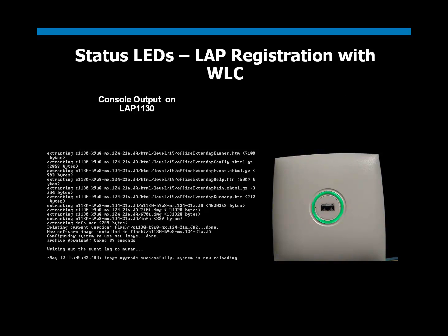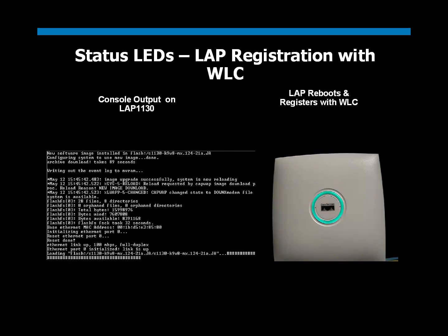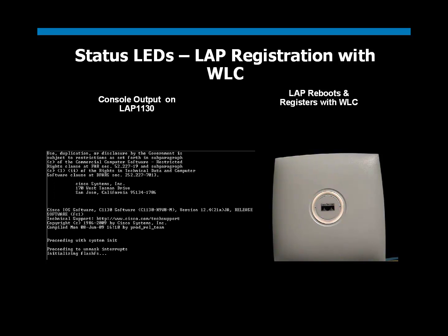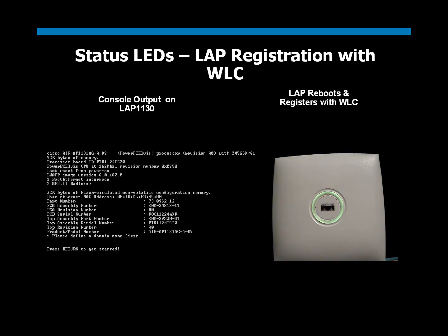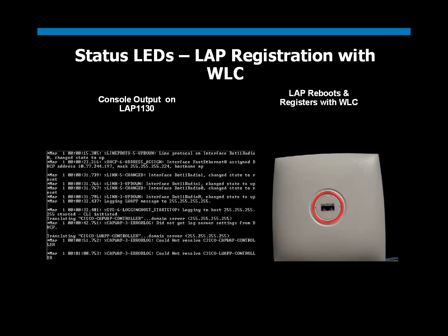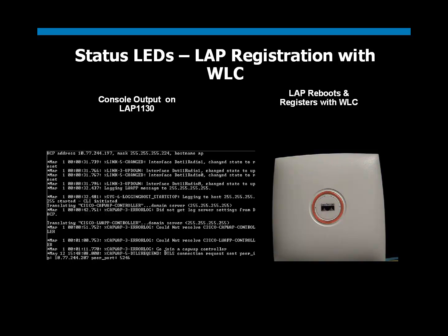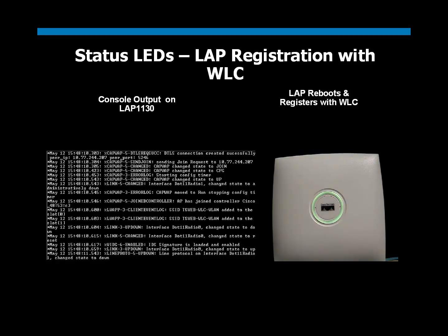Once the image download is complete, the access point reboots and rediscovers the Wireless LAN Controller. As expected, as soon as the access point registers with the Wireless LAN Controller, the status LED turns light green indicating normal operation of the access point. This demo gives a clear picture of the expected behavior of the status LED during the registration process.